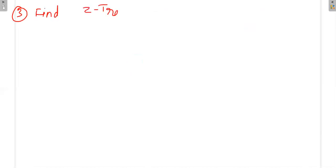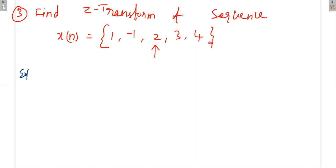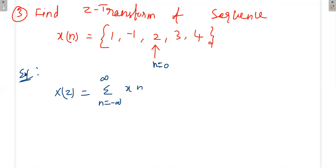Next question: find the Z-transform of sequence x(n) = {1, -1, 2, 3, 4}, where the arrow mark indicates the central value at n = 0. So n = 0 corresponds to value 2. This signal has a finite number of samples. X(z) = summation from n = -∞ to +∞ of x(n)·z^(-n).